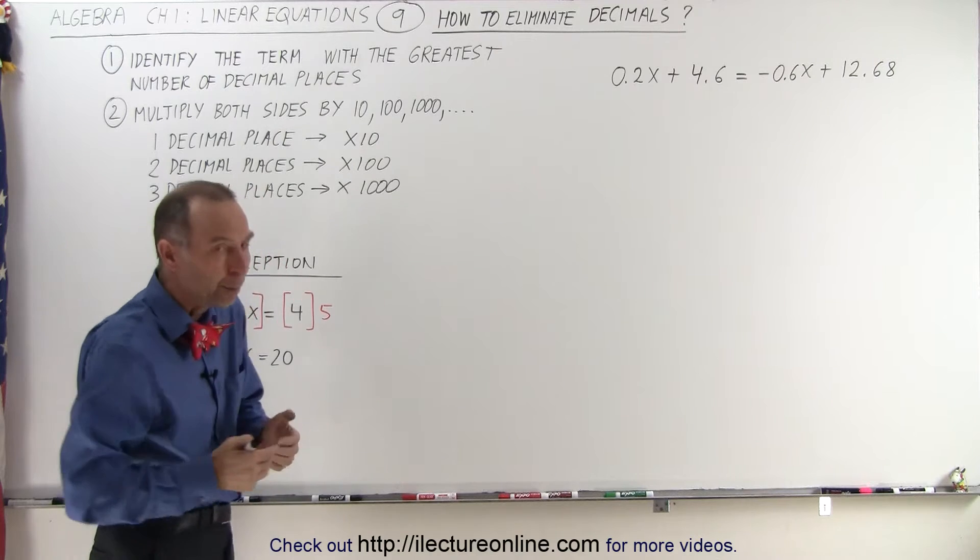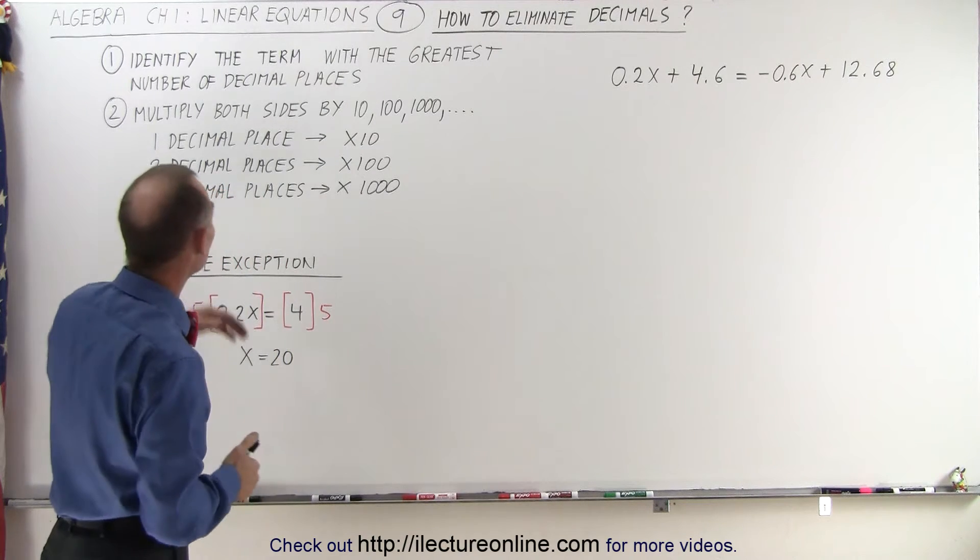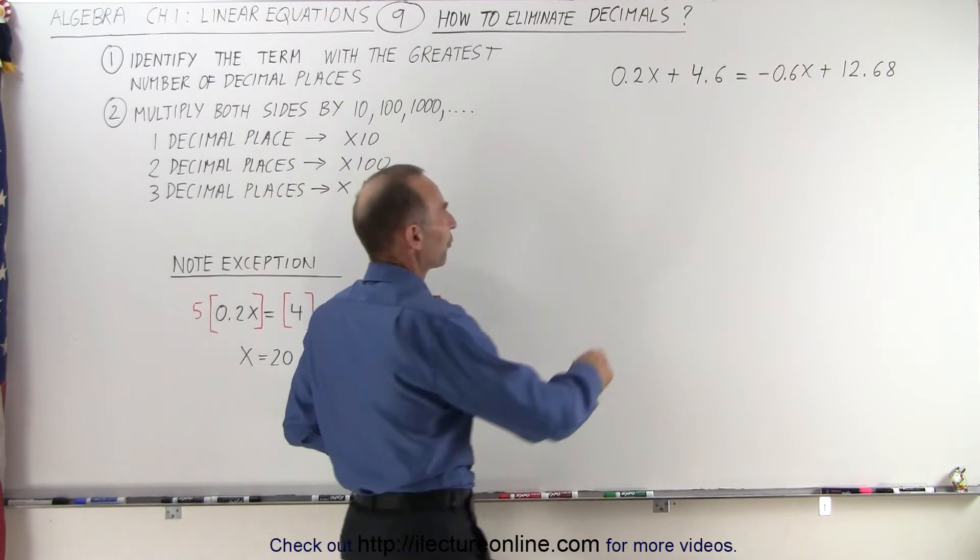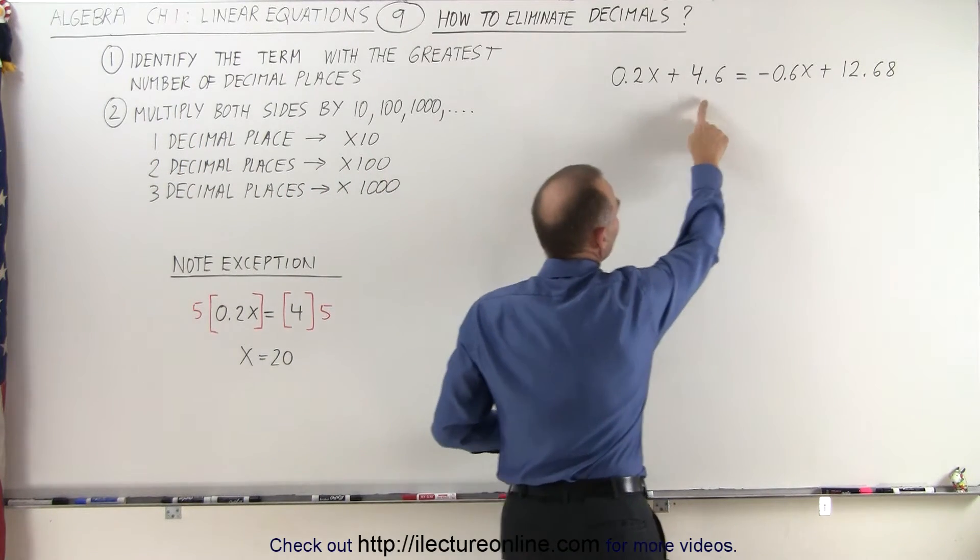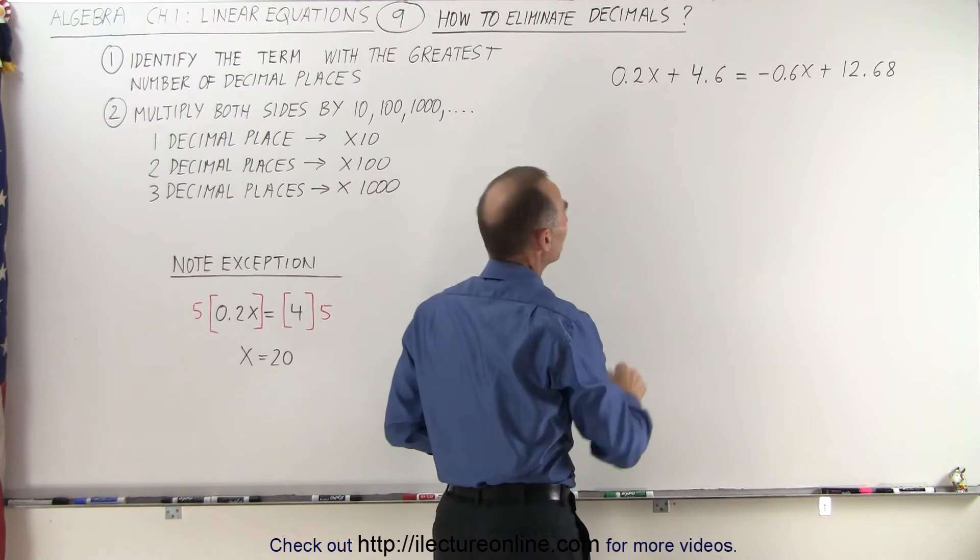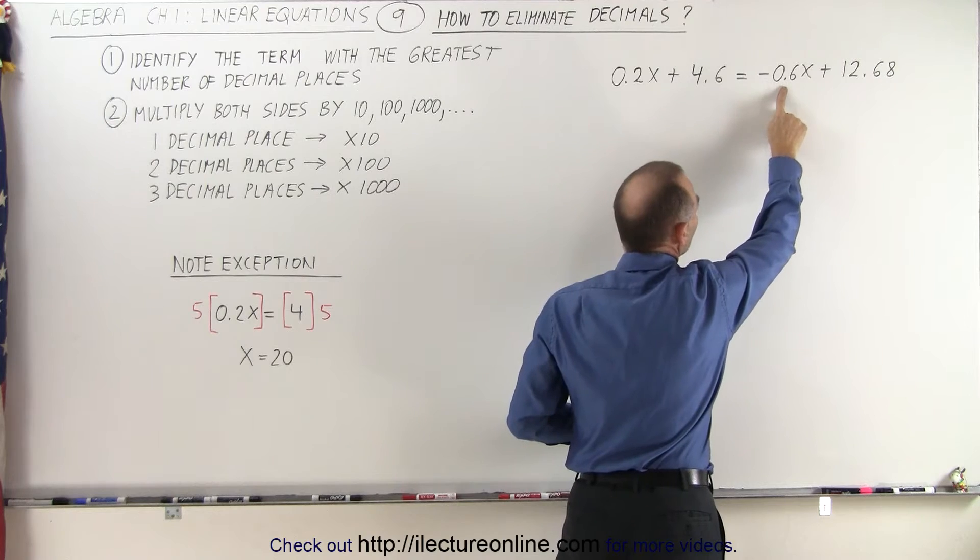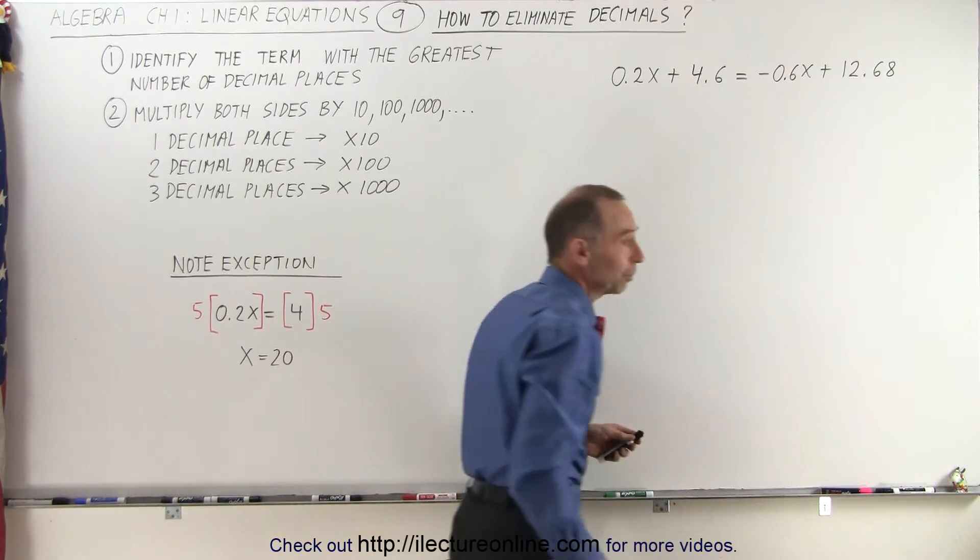So how do we do that? Well, we follow the next two steps. First, we identify the term with the greatest number of decimal places. Notice there are four terms, two on the left side and two on the right side of the equation. The first two here only have one decimal place. This one only has one decimal place, but this term has two decimal places.